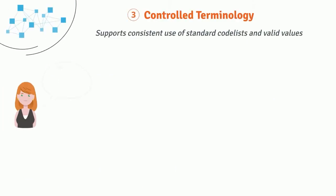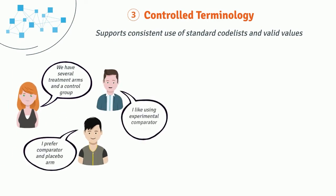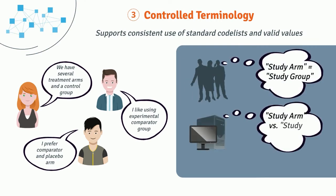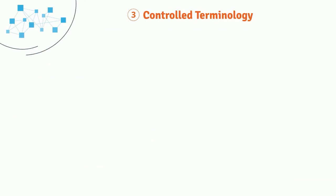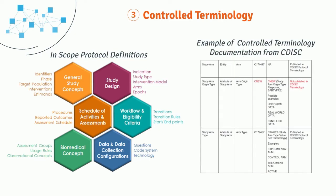For controlled terminology, think of all the ways you could describe an arm of a clinical study. It's easy for people to conclude that 'study arm' and 'study group' are the same, but systems aren't able to make these determinations automatically. Controlled terminology allows for consistent use of valid terms to help both stakeholders and systems align on the data. To support the structure of the study definitions model, CDISC has developed new protocol controlled terminology, including code lists and terms, as well as updates to existing terms as needed.